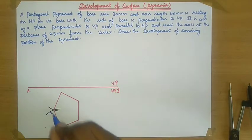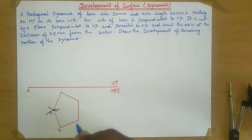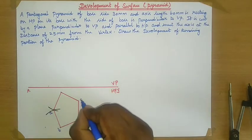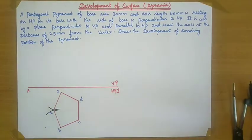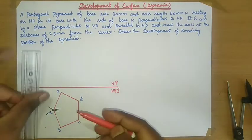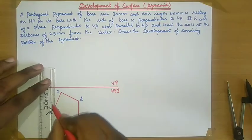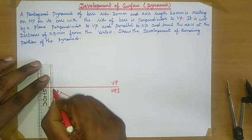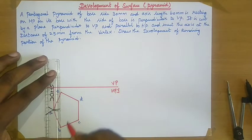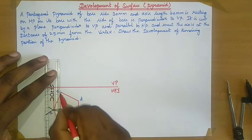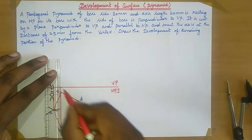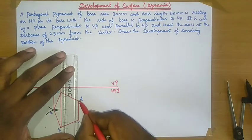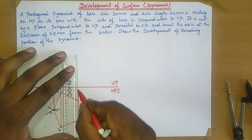Name this point as A, B, C, D, and E. Now extend the projector lines in order to develop the front view section. Extend the projector lines, extend the projector lines, and again extend the projector lines.